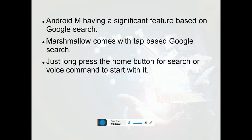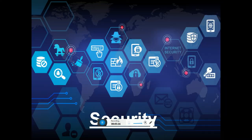Android M adds two significant features based on Google Search. Marshmallow comes with a tab-based Google Search — just a long press on the home button activates a voice command search. It starts immediately.